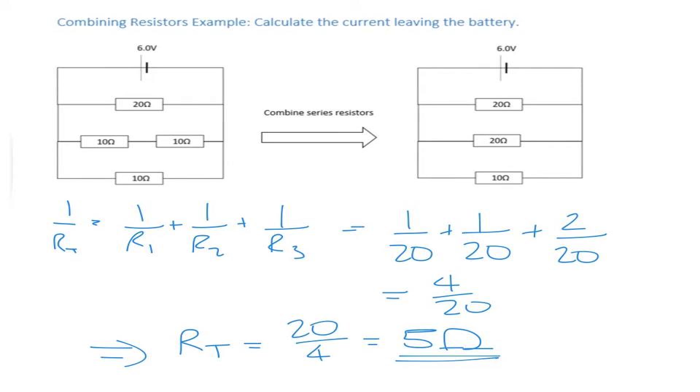Now what the question is actually asking you is the current leaving the battery. And this is where it's really helpful, because what we've done is we've formed an equivalent circuit. So this is still 6 volts, but now we've only got one resistor in it, and it's 5 ohms. And we know a very easy way to calculate the current is start off with Ohm's Law. So we want to calculate the current, simple case of V divided by R, so we've got 6 divided by 5, which gives you 1.2 amps.